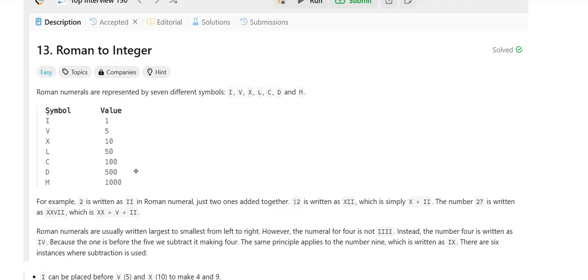As you can see, symbols are given here and their values. So 1 in Roman is I, V is 5, X is 10, L is 50, C is 100, D is 500, M is 1000.